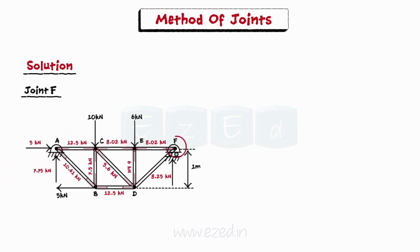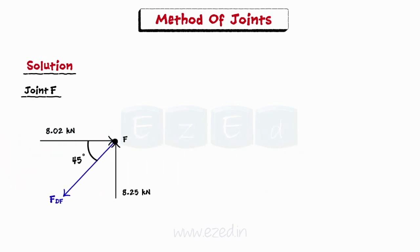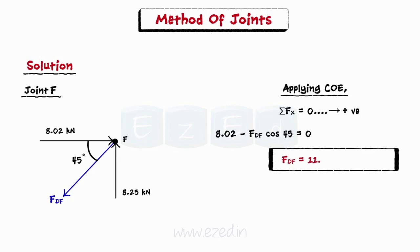We now isolate joint F as the joint has only one unknown member DF. We initially assume the member to be in tension and apply conditions of equilibrium to joint F. Equating the summation of all forces in the x direction to zero, the force in member DF is 11.34 kN, tensile in nature.